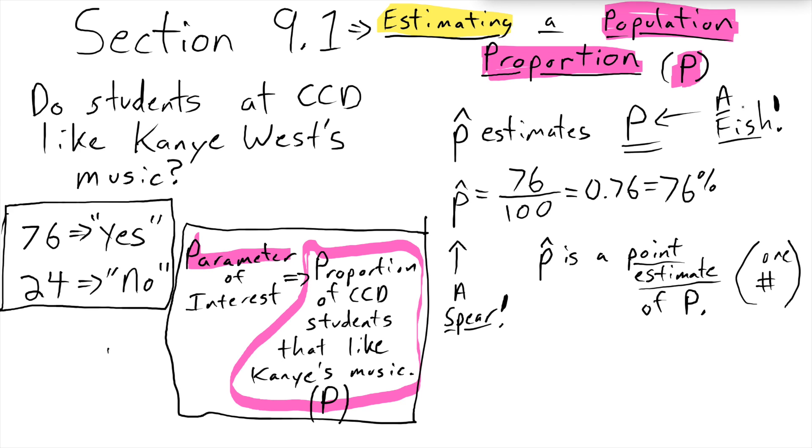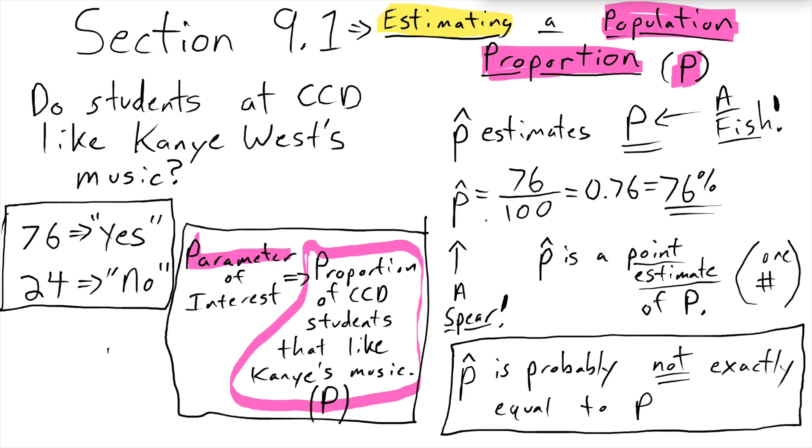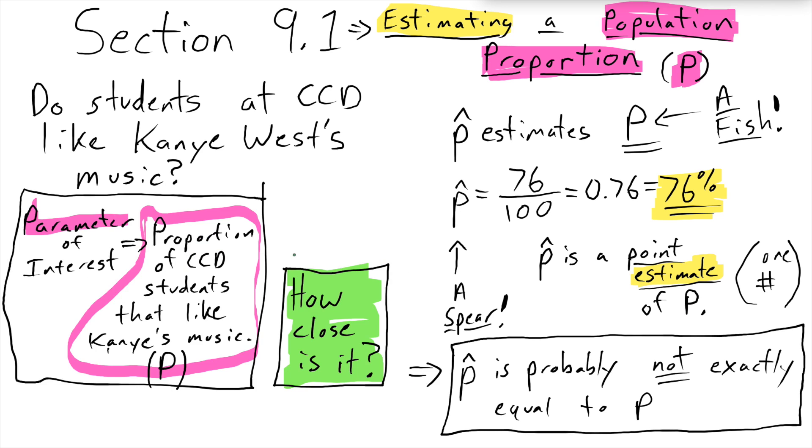If you think about how many spear fishermen, it's not a lot because catching fish with spears is pretty hard to do. Our sample proportion is unlikely to exactly equal the population proportion. 76 out of the 100 people we asked like Kanye, but that is probably not exactly equal to the proportion of everyone at CCD that likes Kanye's music. So in a way, this 76% is likely to be wrong. It's an estimate, but it's not perfect. And in statistics, we like to be correct. If I report 76% as being equal to P, well, that's not exactly true. It's an estimate of P.